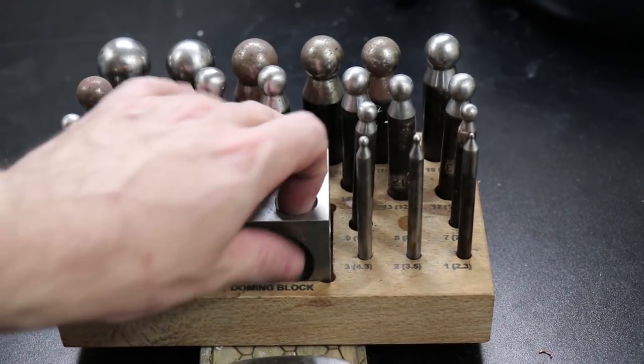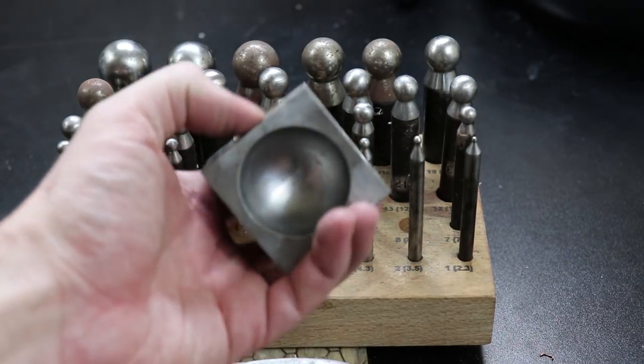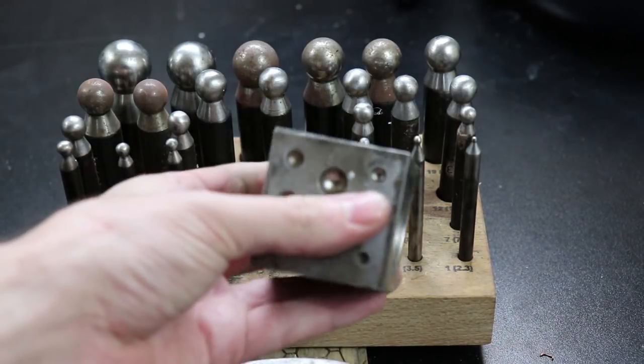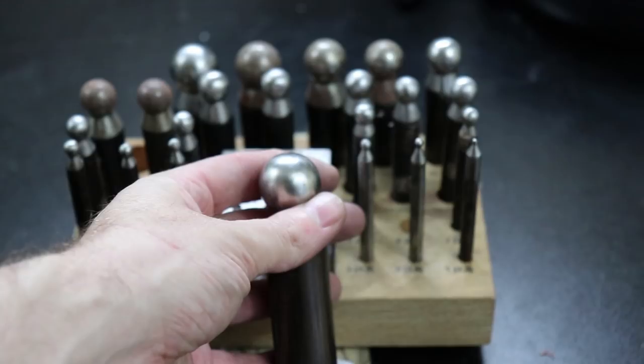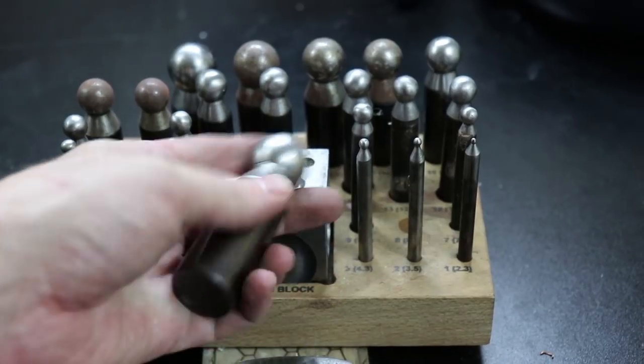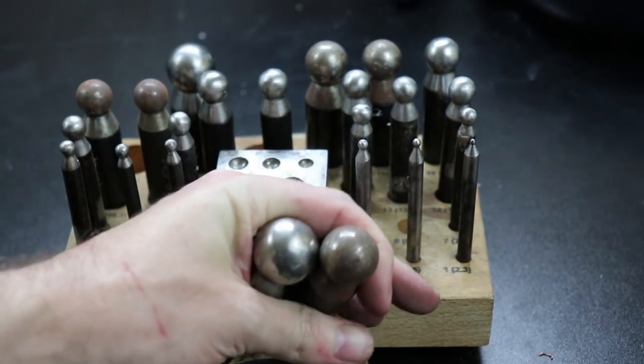This is a very inexpensive dapping setup. Basically, these tools are used to add curvatures to things, or to make domes. I've actually used them in the past to make this bracelet, and this necklace. Just try to keep moisture off of them, because they will get surface rust on them very quickly, and I'm in the process right now of cleaning them all.